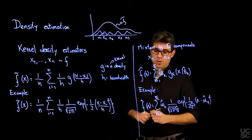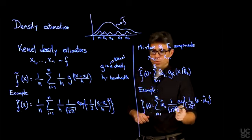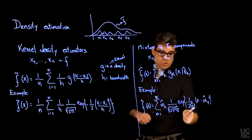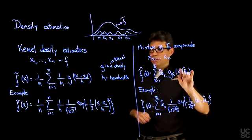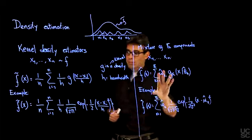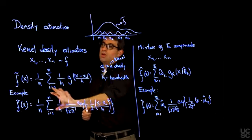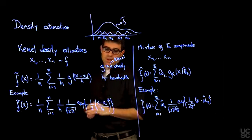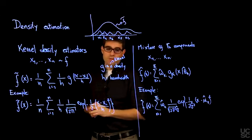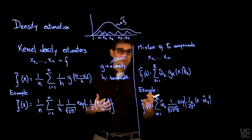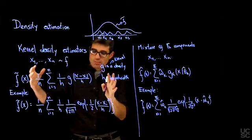You can see that there is a very strong relationship between these two approaches, and in particular that we can think about doing Gaussian location mixtures of Gaussian distributions where all the components have the same sigma as being in some sense a model-based counterpart to this kernel density estimator that is very widely used.